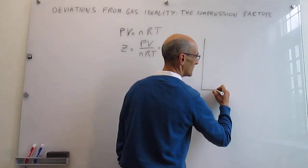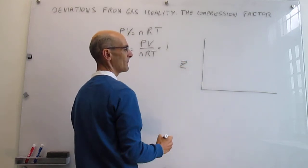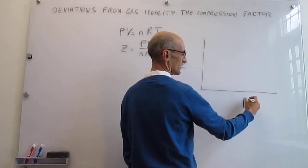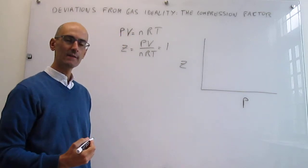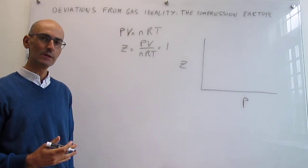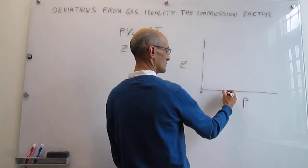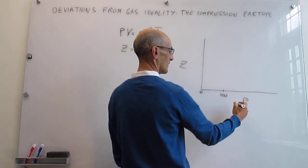What you can do is plot how that compression factor Z behaves as a function of pressure. It turns out that a breakdown from ideality is experienced at high pressures. So we start at low pressures but then go to maybe 100 atmospheres, 200 atmospheres, and even larger.